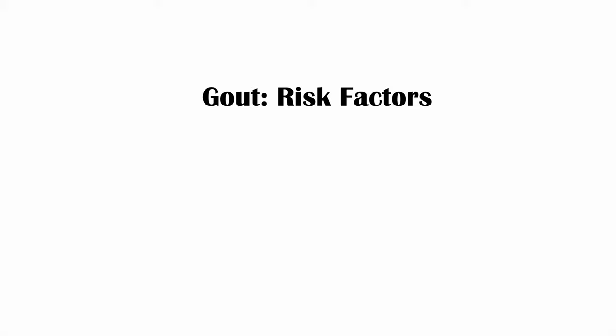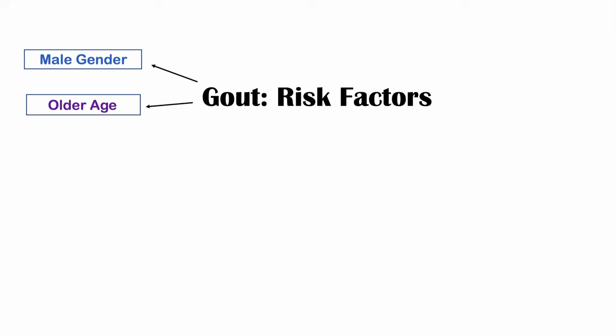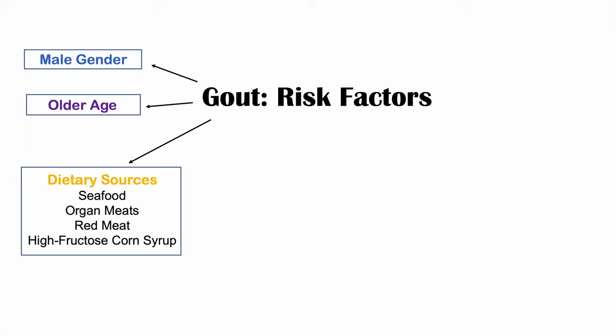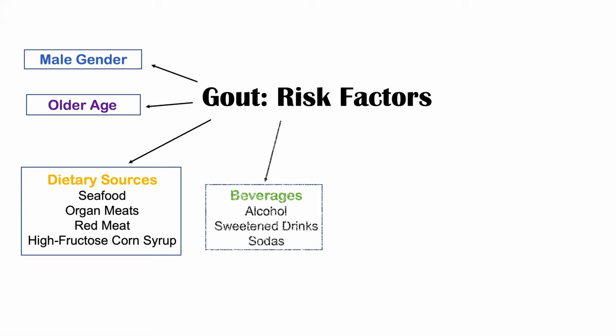Risk factors for gout include being male — males are two to six times more likely than females. Older age also increases prevalence. Certain dietary sources can increase the risk of hyperuricemia: seafood like lobster and shrimp, organ meats like liver and kidneys, red meat like beef and pork, and high fructose corn syrup in beverages. Alcohol is a big risk factor, as are sweetened drinks containing high fructose corn syrup and certain sodas.